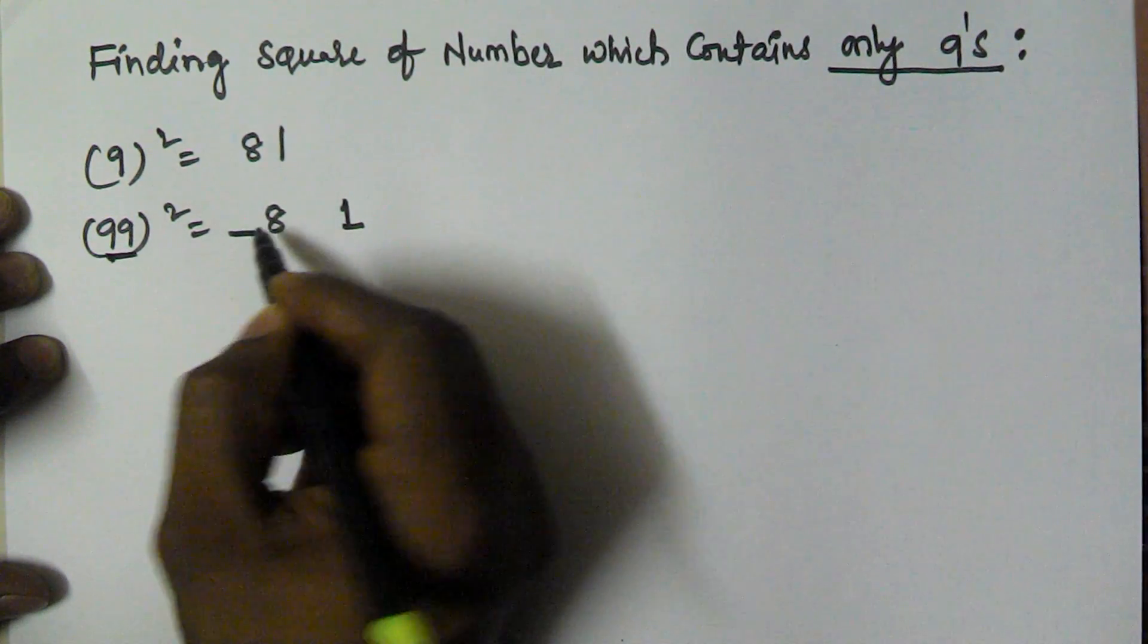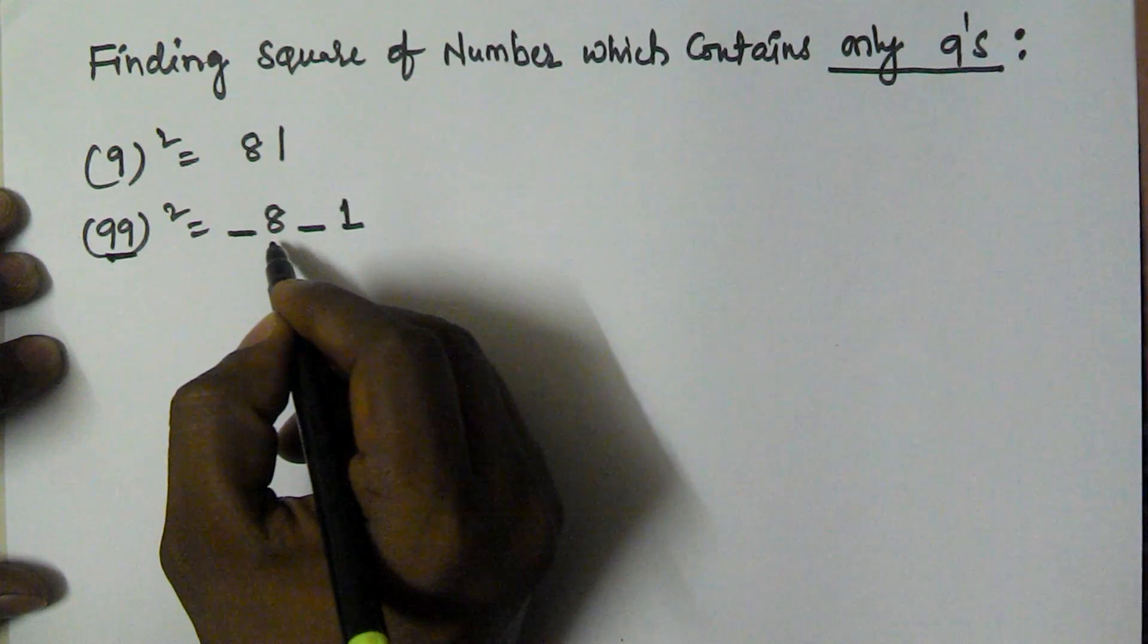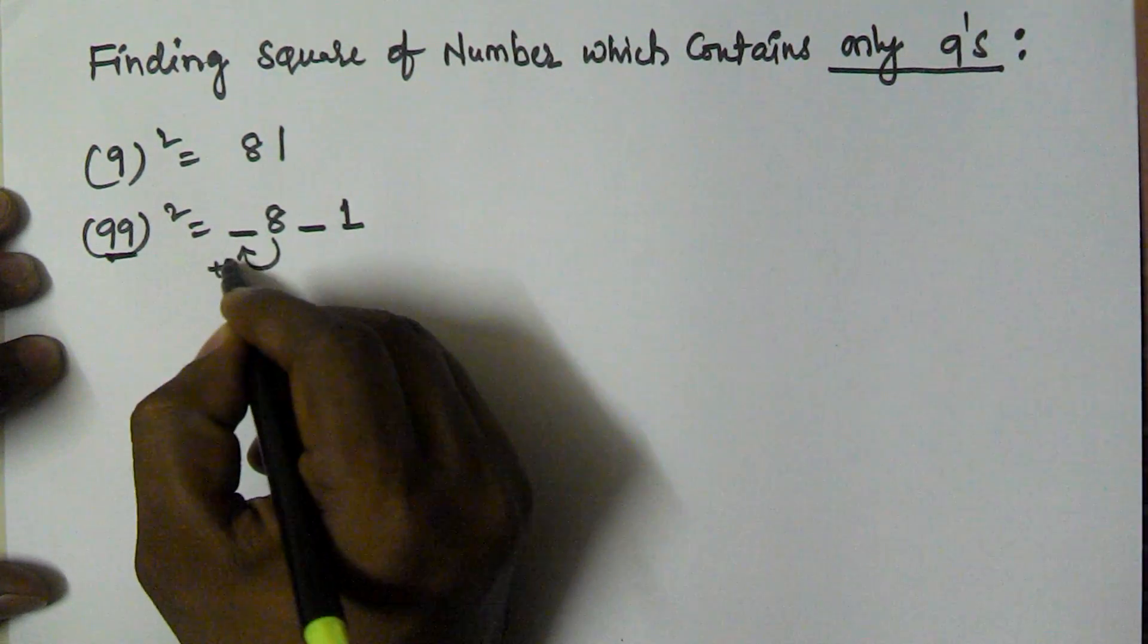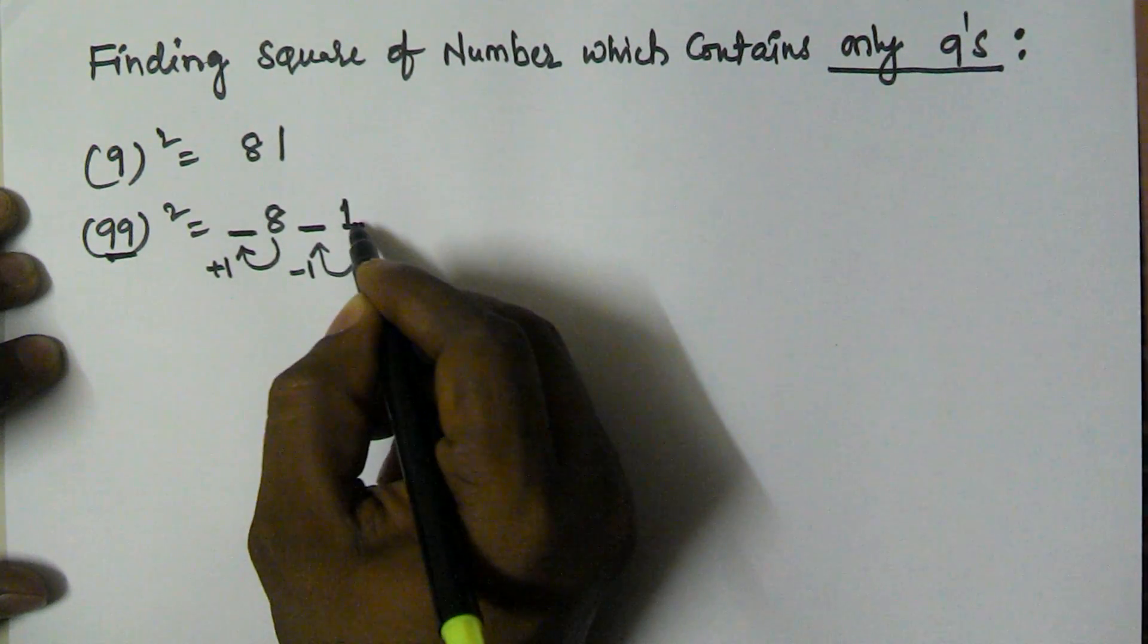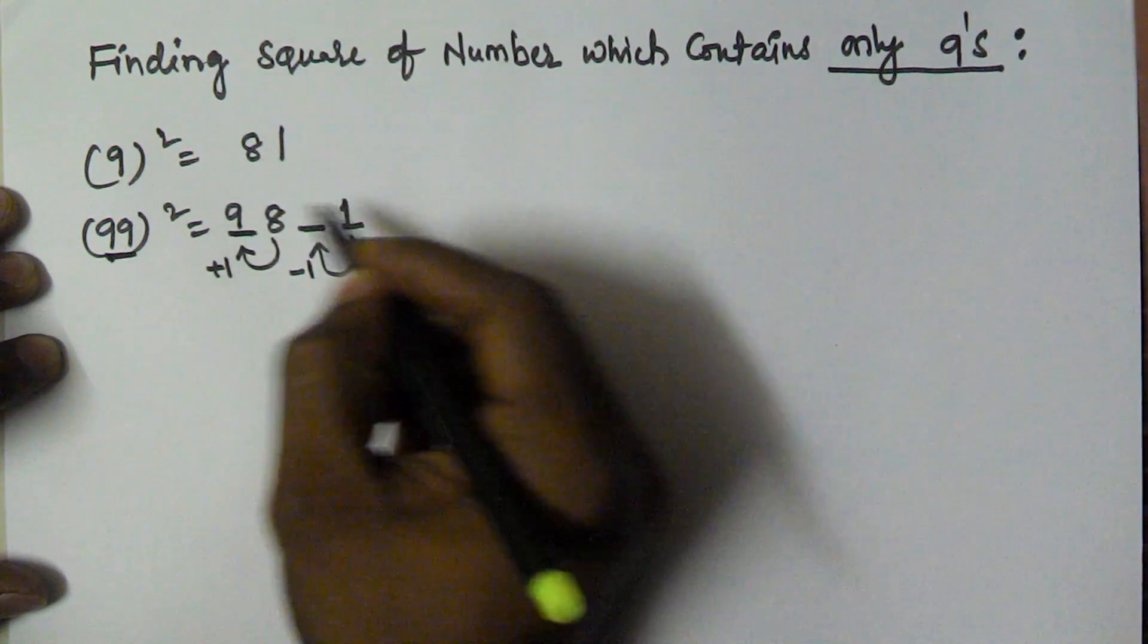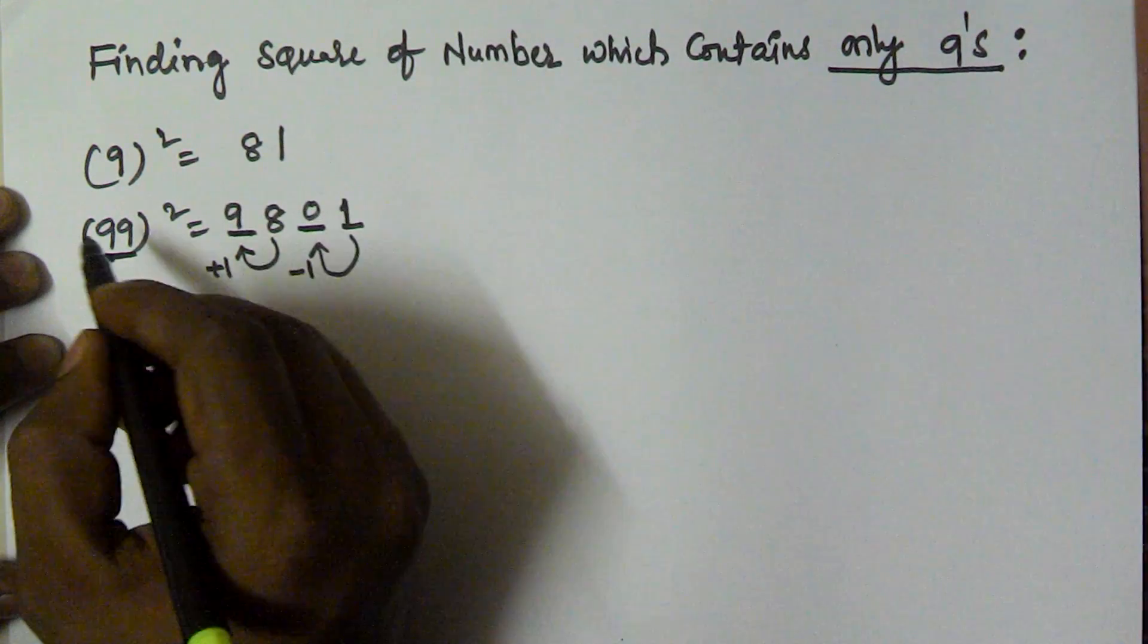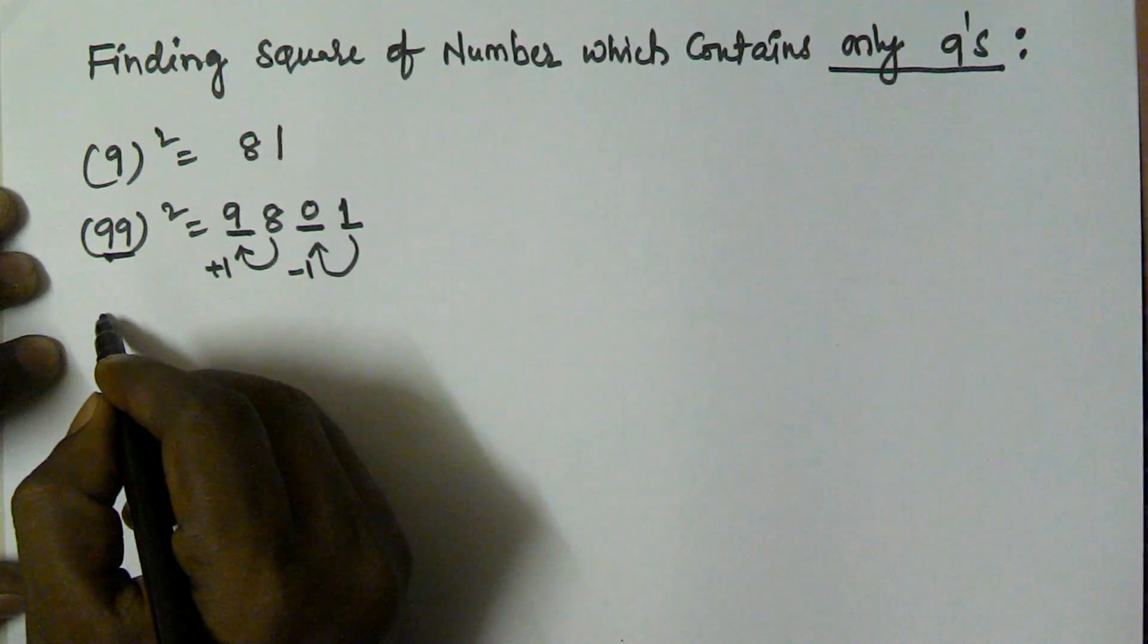I'm going to take 1 place before 8 and 1 place before 1. Here we use plus 1 of this value, and here minus 1 of this value. Plus 1 of 8 is 9, and minus 1 of 1 is 0. So 99 square equals 9801.